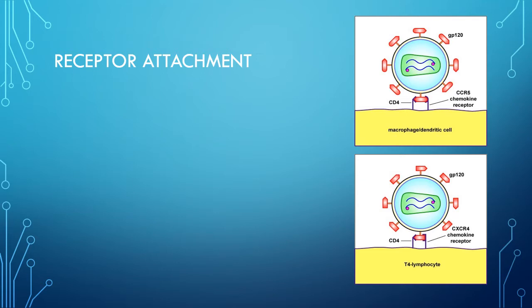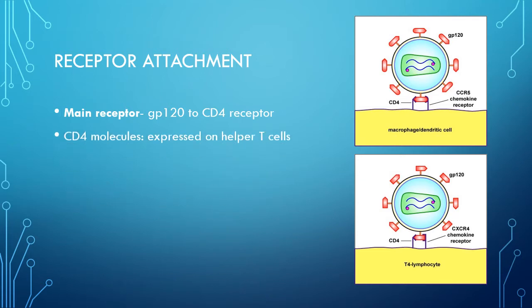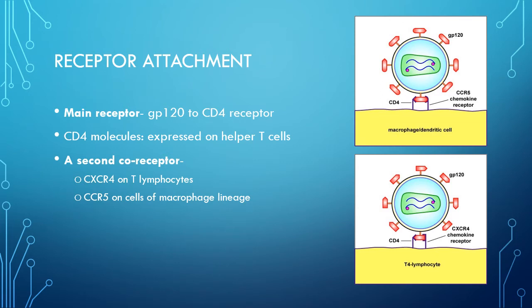In pathogenesis, the first step is receptor attachment — the first step of HIV replication or life cycle. Two receptors are essential for HIV entry into the host cell. The main receptor: HIV enters a target cell by binding its gp120 to the CD4 receptor on the host cell surface. CD4 molecules are mainly expressed on helper T cells and also on monocytes, macrophages, Langerhans cells, etc.